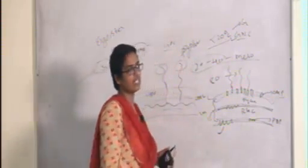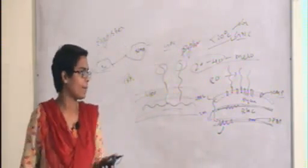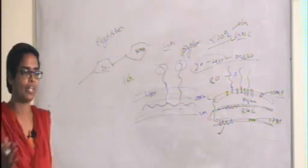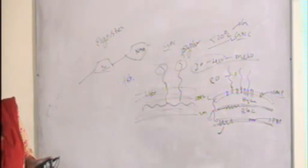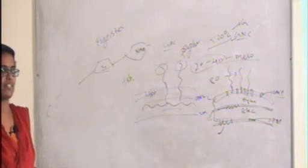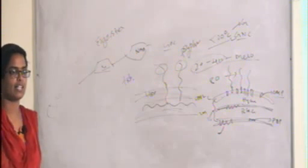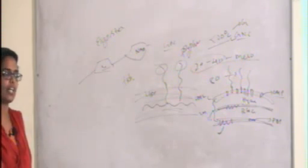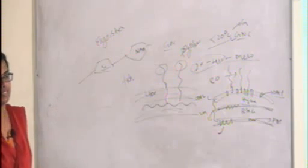Some bacteria grow up to 80°C and are known as thermophiles. Examples include Bacillus stearothermophilus, Geobacillus stearothermophilus, and Bacillus subtilis — all these organisms are thermophiles.